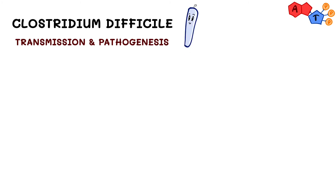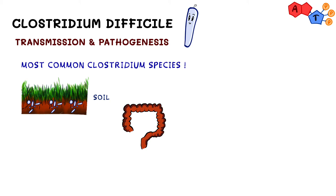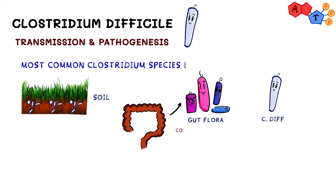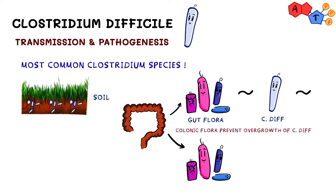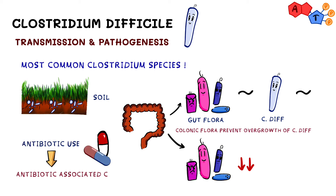Finally, we have Clostridium difficile, also known as C. diff, which is the most common out of the whole family. Its spores are found everywhere in nature, including soil. Ingestion of C. diff is not harmful with normal GI flora, as the colonic flora prevents overgrowth of C. diff. It is harmful in cases where the normal gut flora has been altered, such as in people taking antibiotics, causing antibiotic-associated colitis because antibiotics create a favorable environment for C. diff growth.